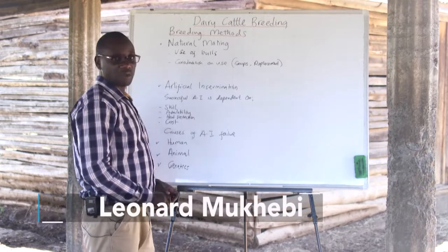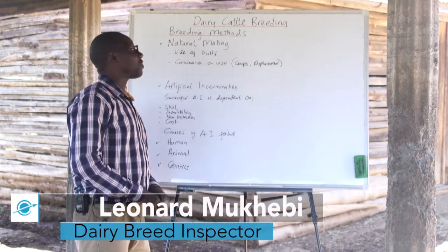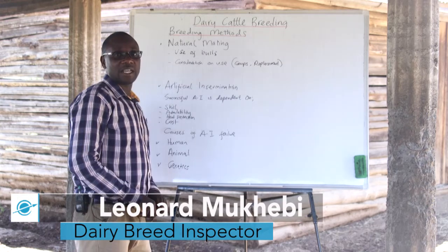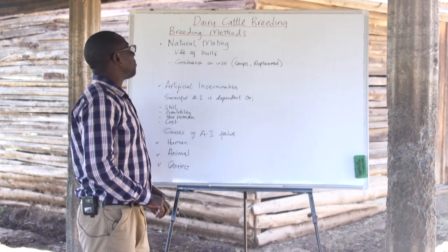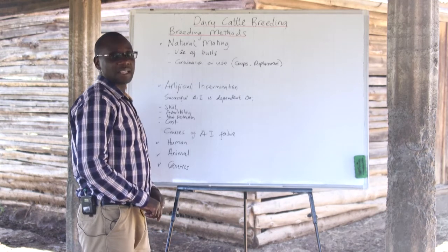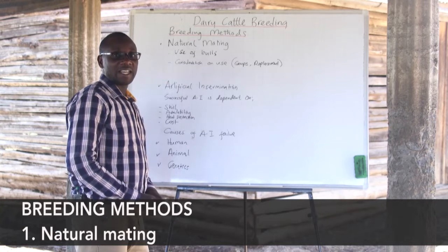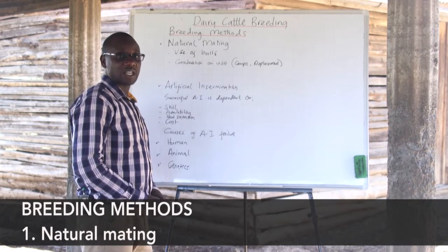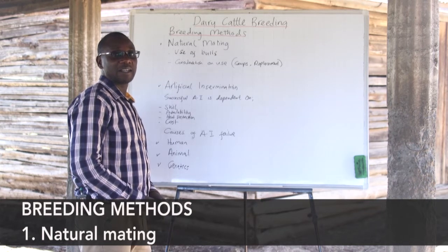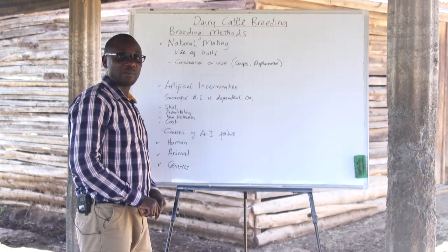Let us talk about breeding methods. There are two main breeding methods known in livestock breeding. The first one is natural mating, which involves the use of bulls for breeding — live bulls that farmers can keep on the farm.